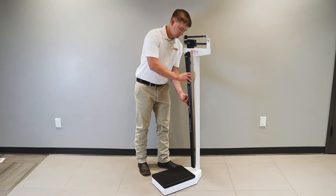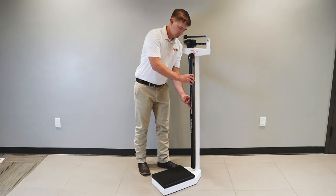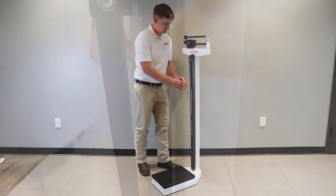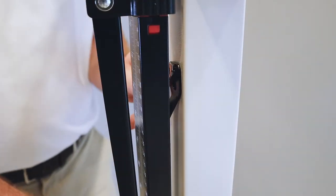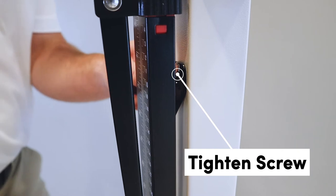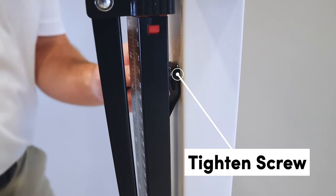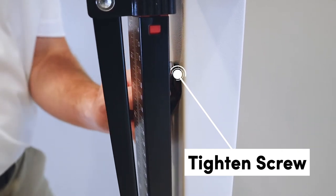The included height rod can be attached by simply placing the slotted holes of both brackets on the back of the height rod over the two hex head screws on the front of the column and pulling down. Use the included wrench to tighten the screws, being careful not to over tighten them.